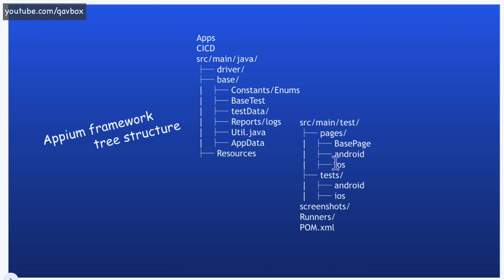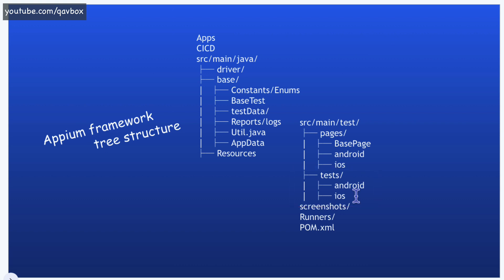When creating two separate page object packages, the user journey is also expected to be different. The test cases will also need to be separate, because one test case cannot pull data from Android and also from iOS classes — they are distinct. So if you separate Android and iOS page objects, you need two separate test packages as well. Android holds all Android-related test scenarios, and iOS has its own separate test scenarios. The only drawback is that you have to maintain two separate sets of Android and iOS packages.